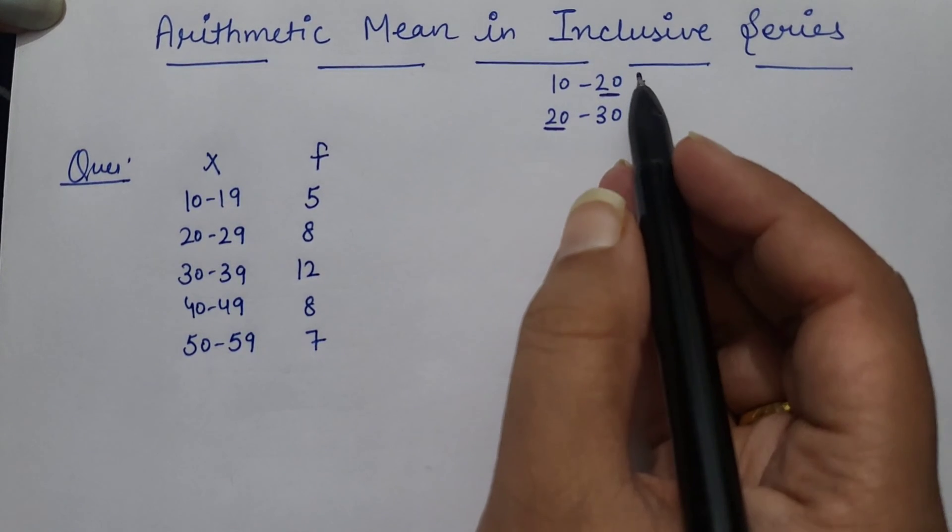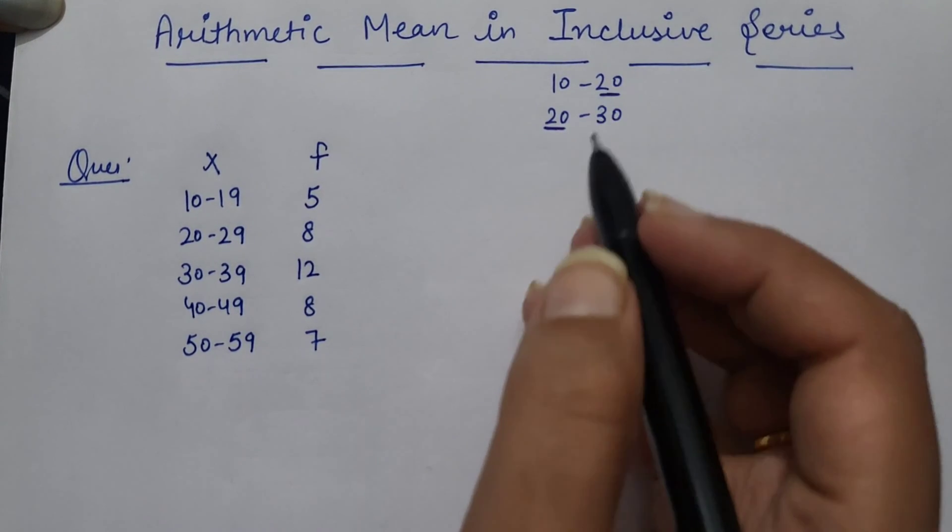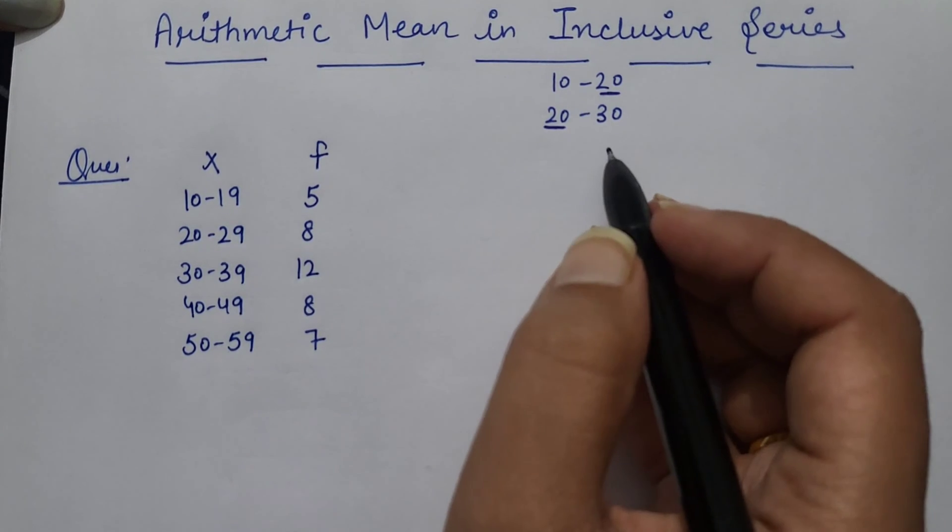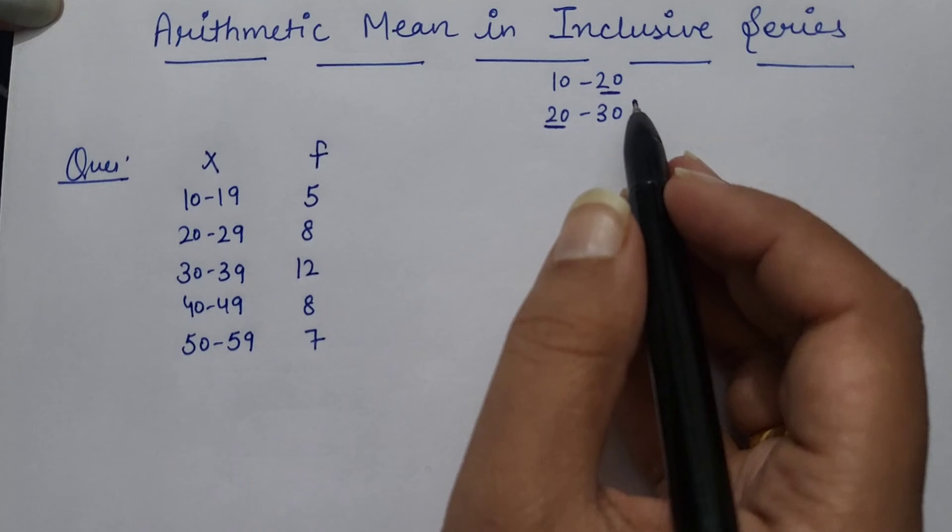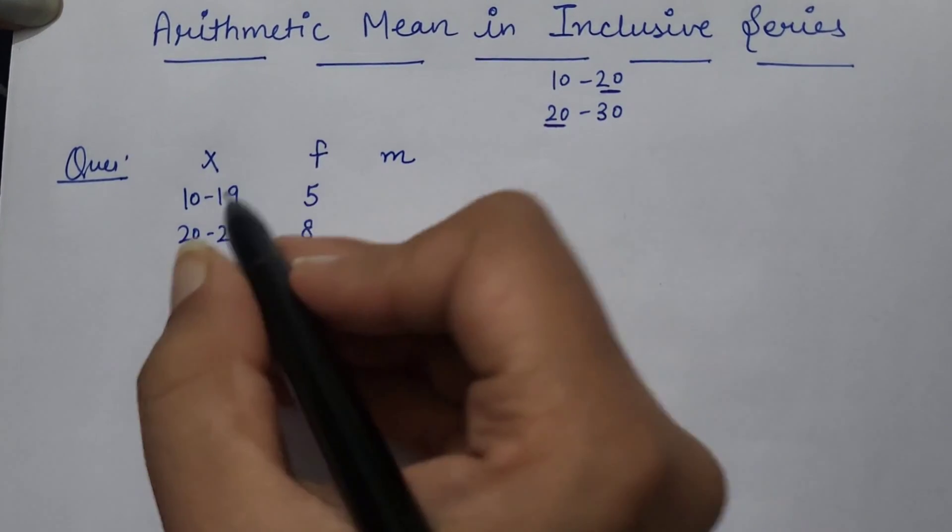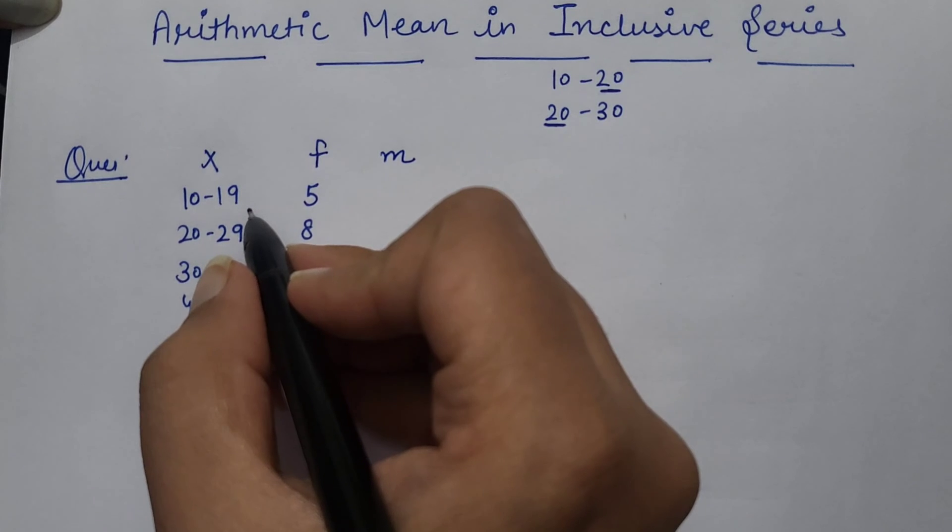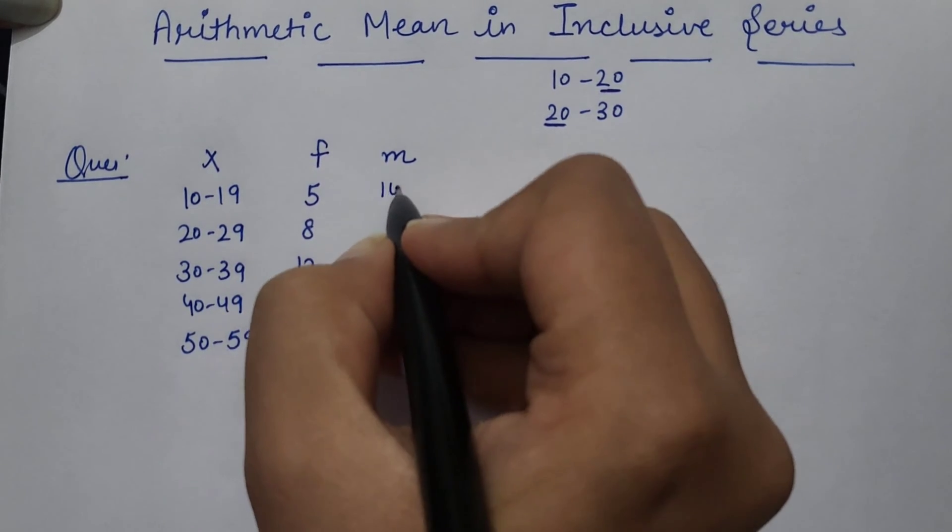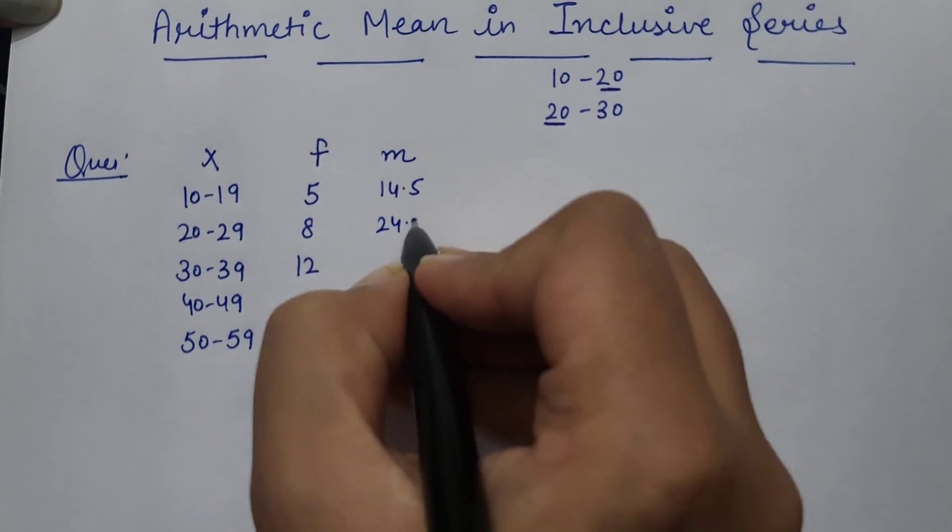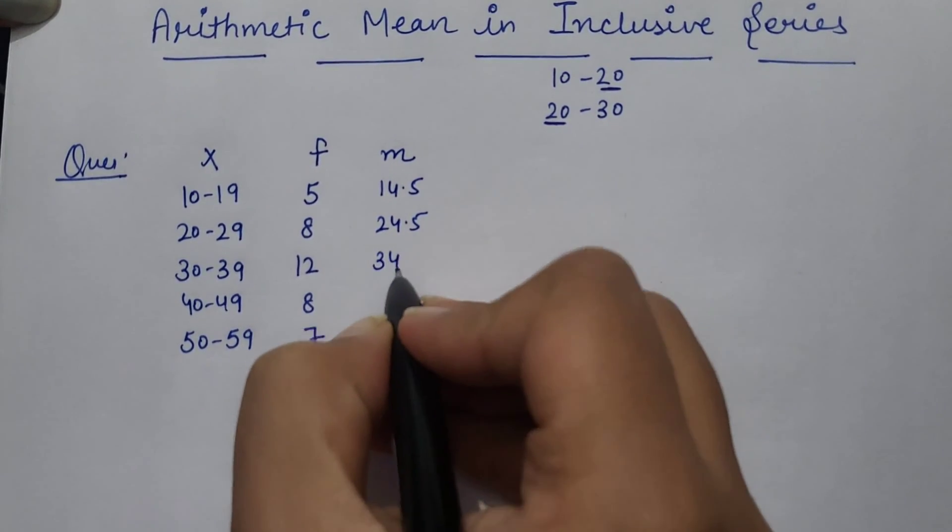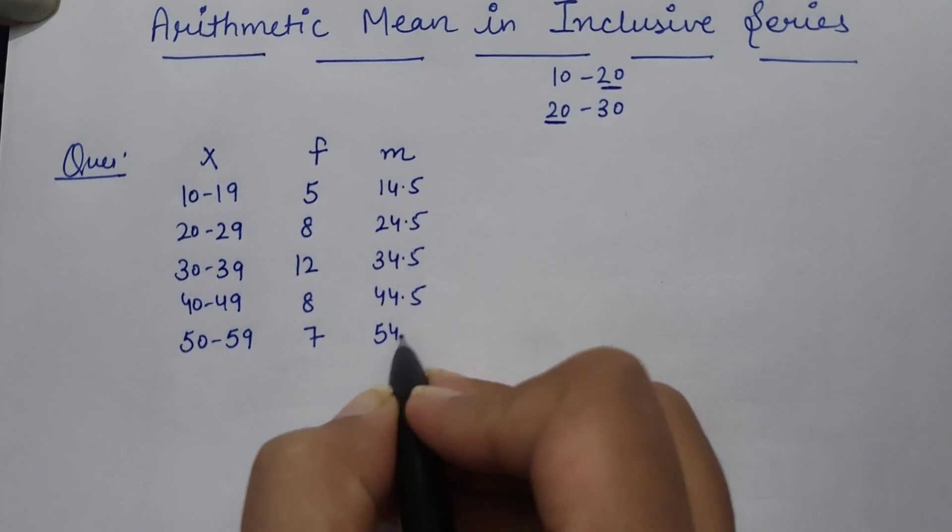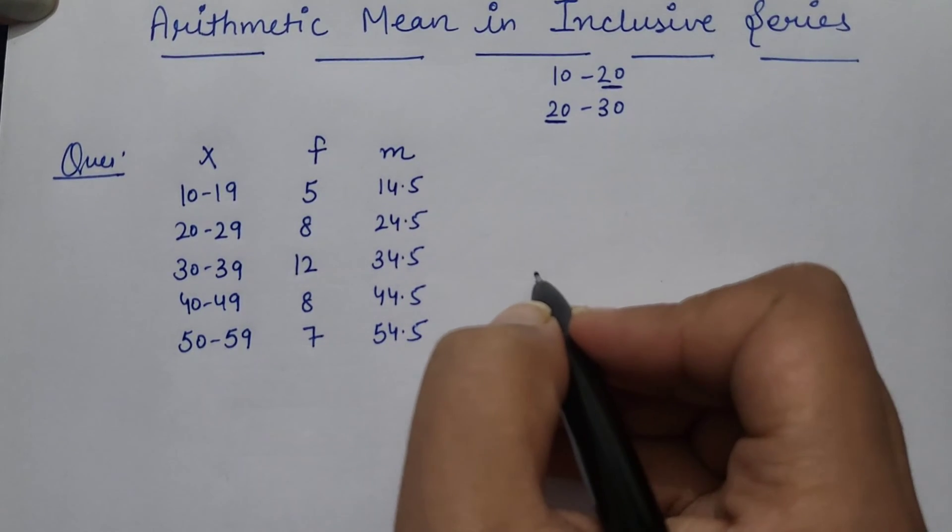So in inclusive series nothing gets changed. We can calculate mean just as we did in the continuous series. So here we need to take mid value. 10 plus 19 divided by 2 is 29, 14.5. Then 24.5, 34.5, 44.5, and 54.5.